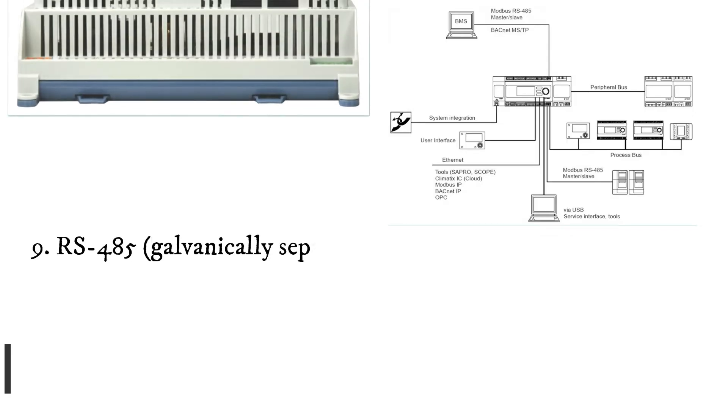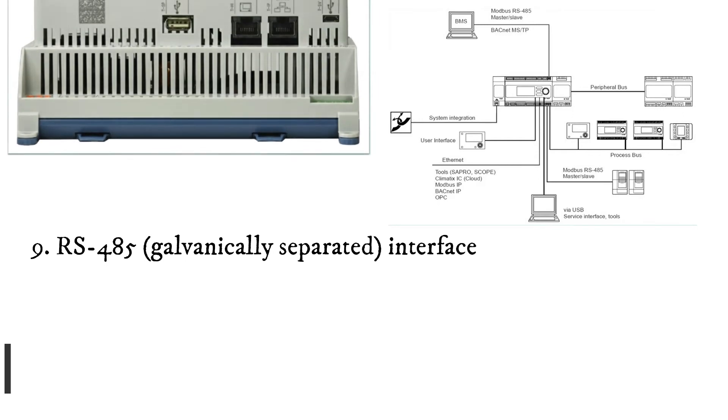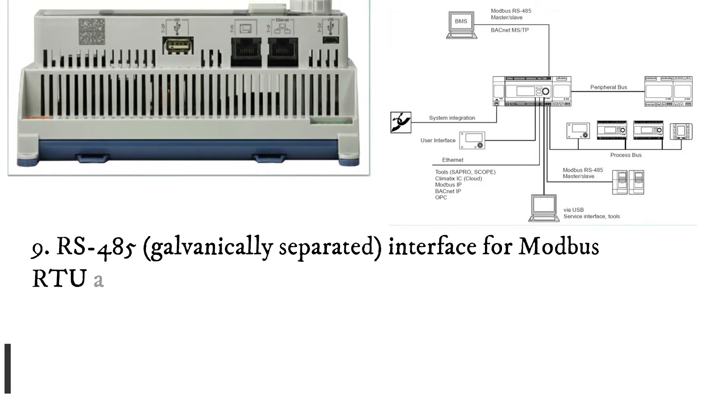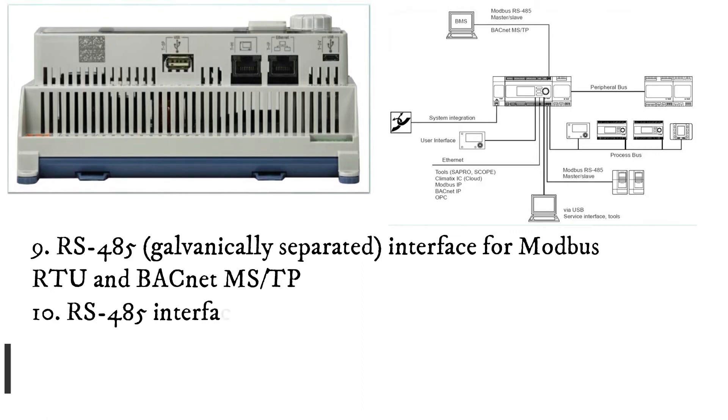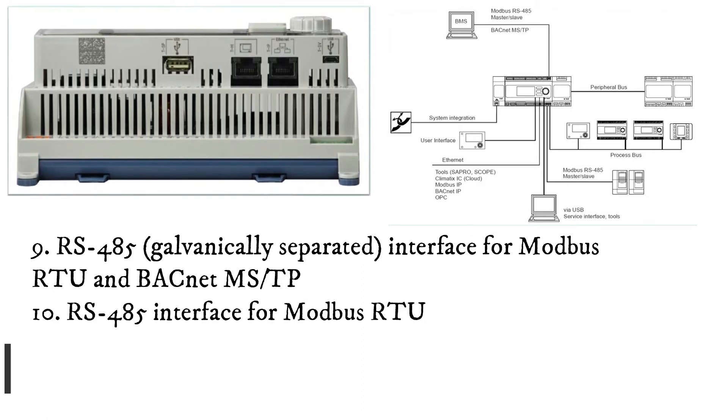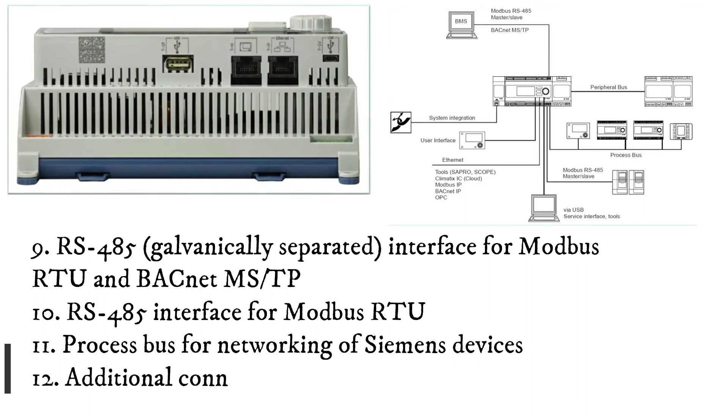9. RS-485 galvanically separated interface for Modbus RTU and BACnet MS-TP. 10. RS-485 interface for Modbus RTU. 11. Process bus for networking of Siemens devices.